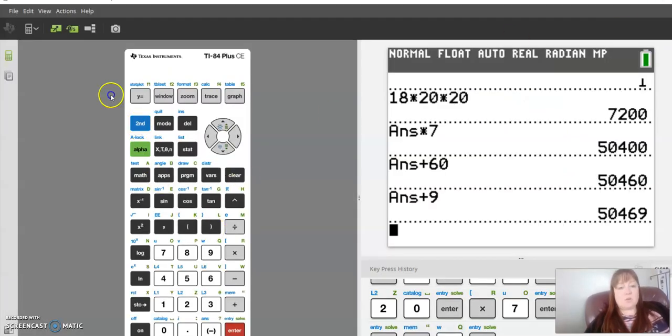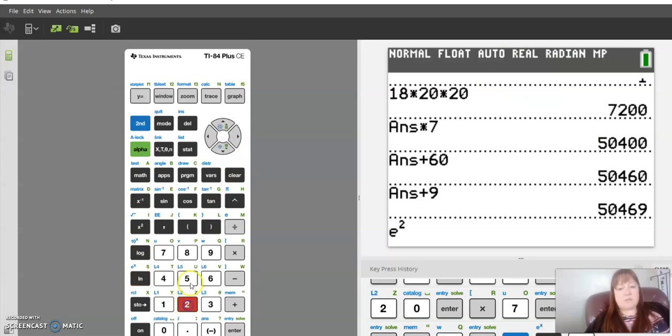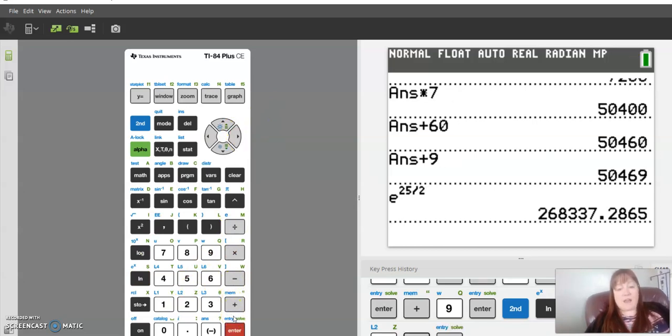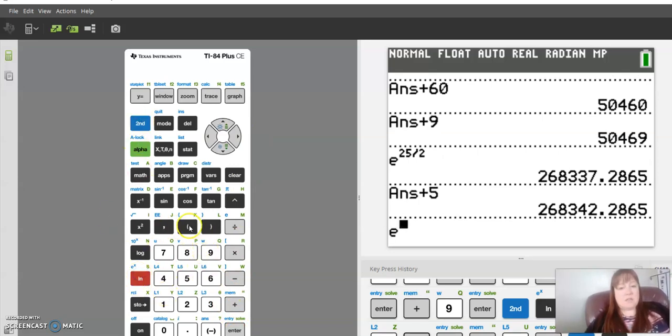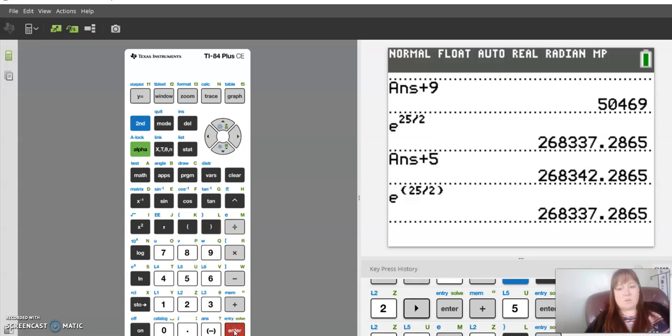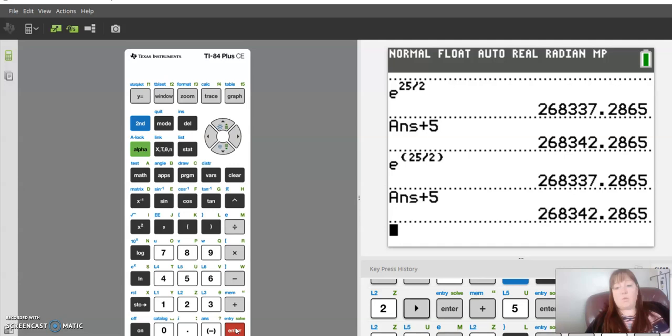So we're just going to go over here. We're going to go e to the 25 halves, which is 25 over 2. Make sure it's all inside that exponent. Now we're going to come out of the exponent to add the 5, right? Plus 5 equals, okay, let's make sure that we did this right. Second e to the 25 divided by 2. Let's make sure that that comes out the same. Yep, plus 5. Okay, so there we go. That's our answer.